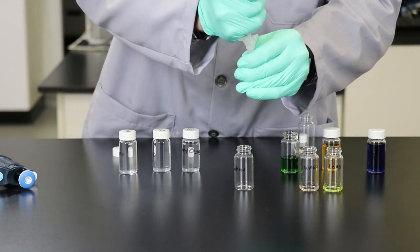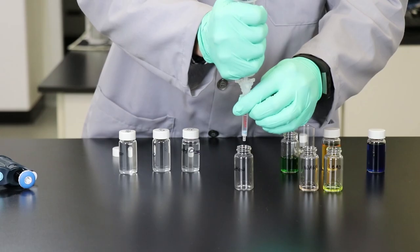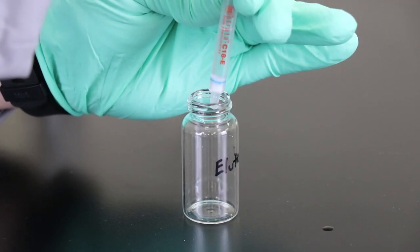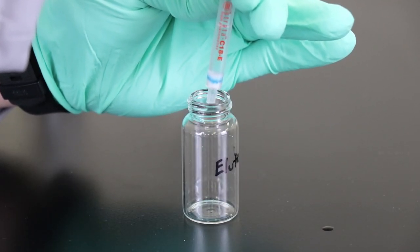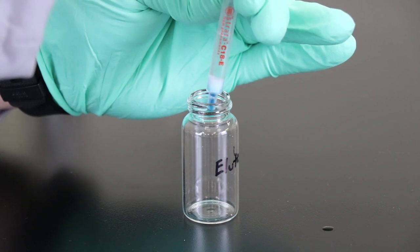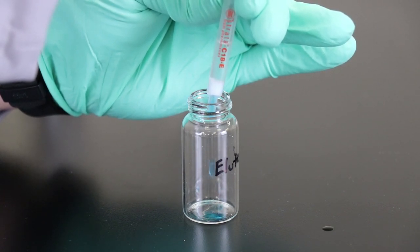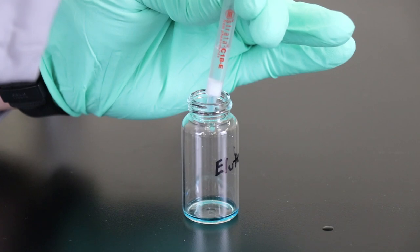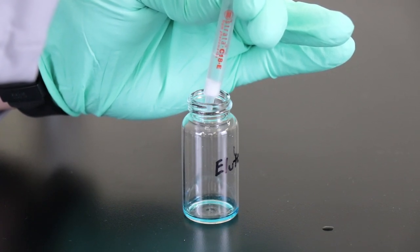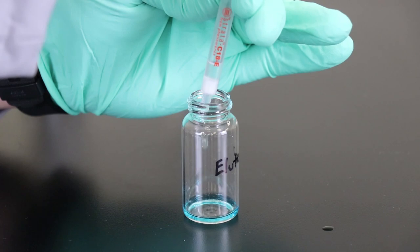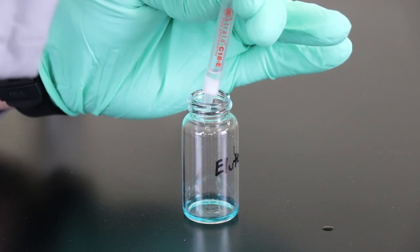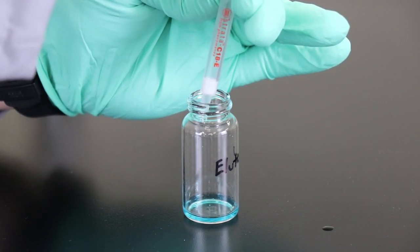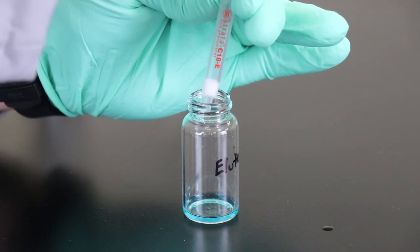So again, flow rate is very critical here. When loading and eluting, slow is safe is kind of the general thing we live by. So about a drop or two per second, in this particular case is good enough. You'll notice that the blue dye is hitting the bottom of the scintillation vial pretty nicely there. And we have effectively washed off all of the blue dye.